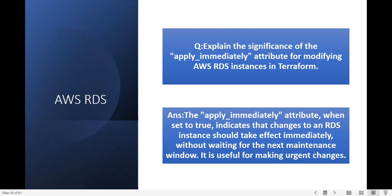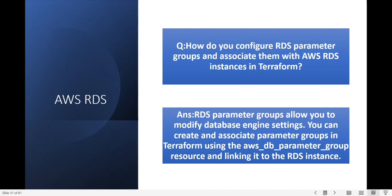Next question: how do you configure an RDS parameter group and associate it with an RDS instance in Terraform? RDS parameter groups allow you to modify database engine settings. You can create and associate parameter groups in Terraform using the aws_db_parameter_group resource and linking it to the RDS instance.